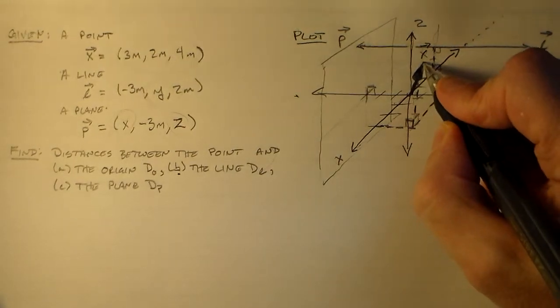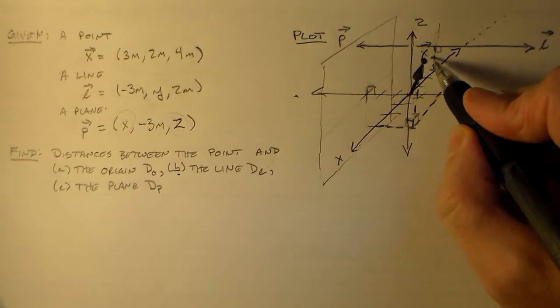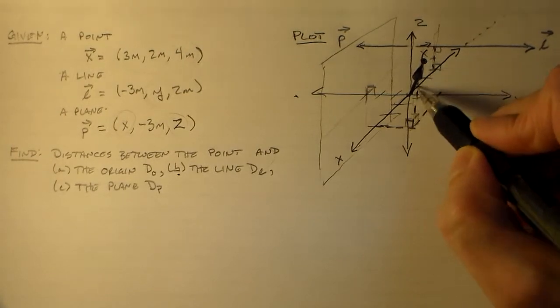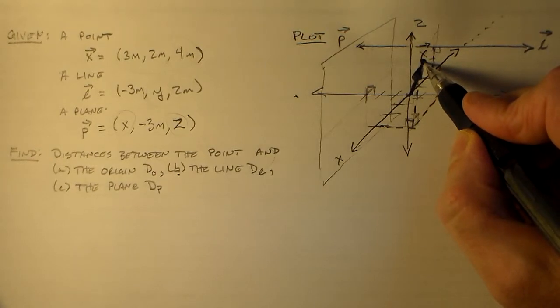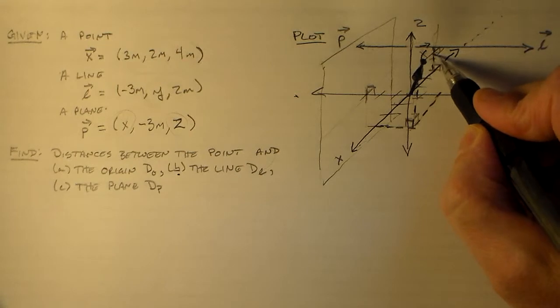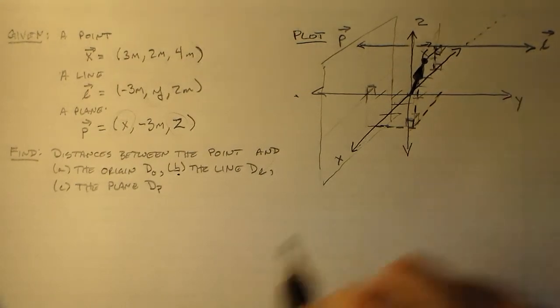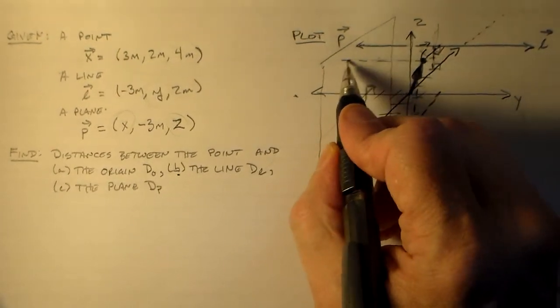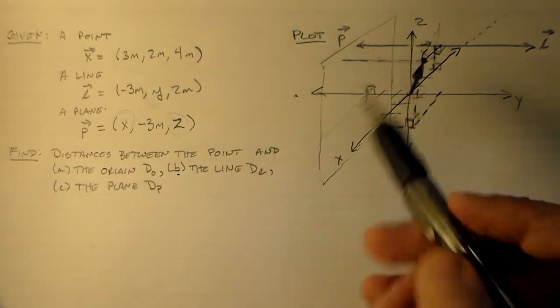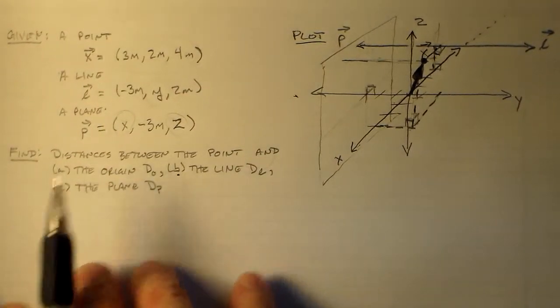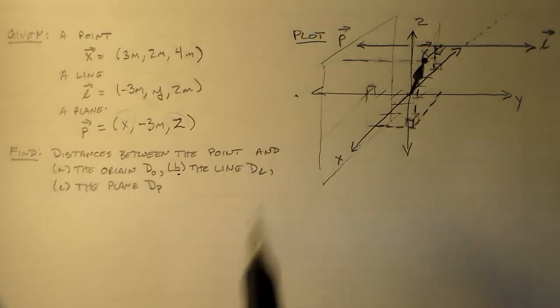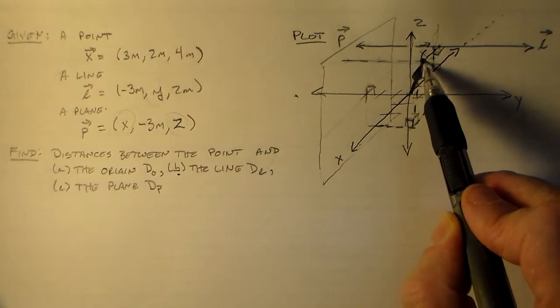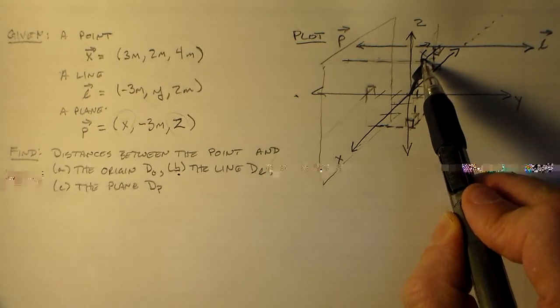So the whole deal here is I've got my little point right here, my vector point over here. And I want to figure out what the length of this vector is. Basically, the distance from the origin is the length of this vector. I want to figure out what the length, the distance between here and here are, between my point and this line. And the distance up here, so this distance here.